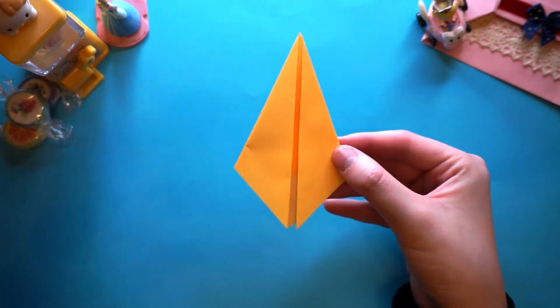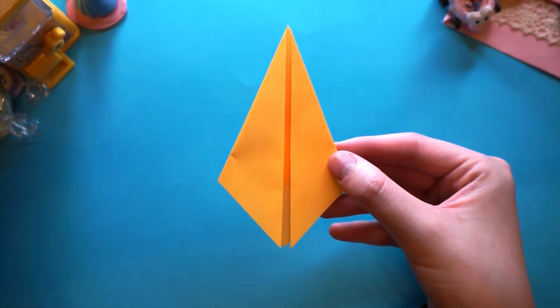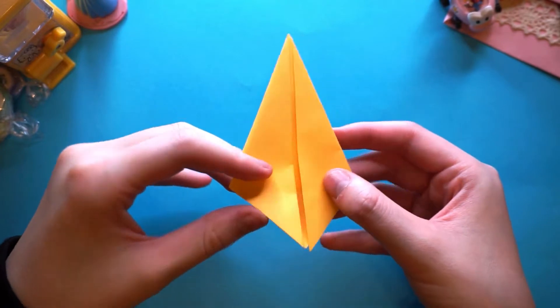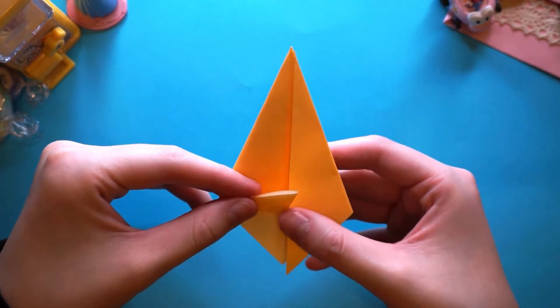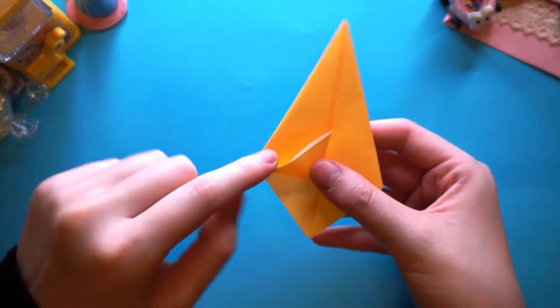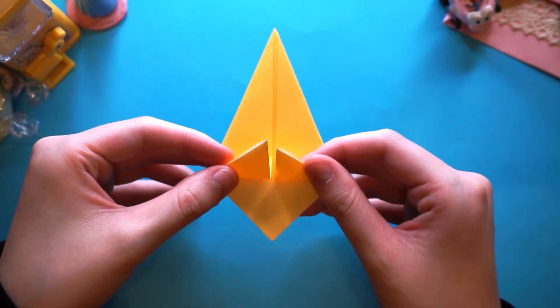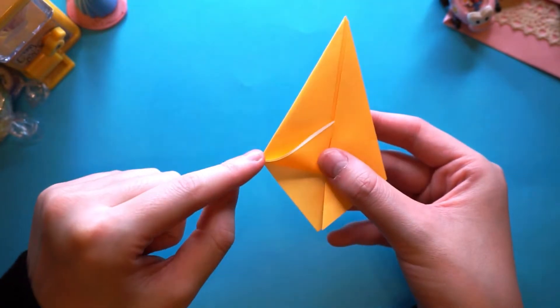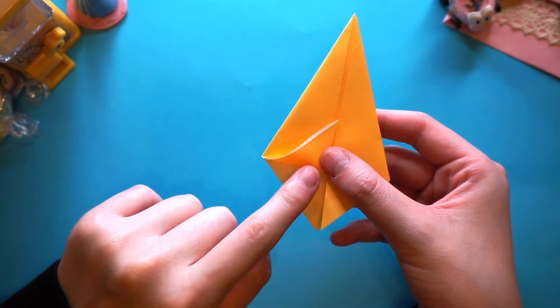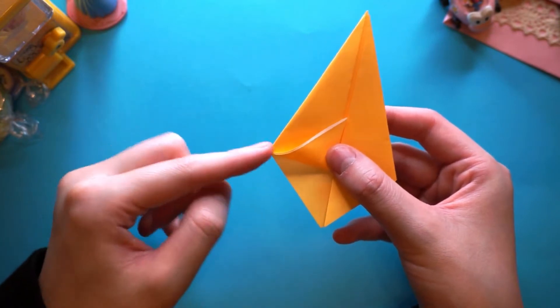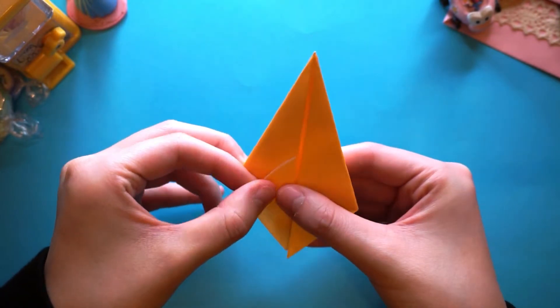we're going to flip the model over. Once we've flipped it over, what we're going to do is fold both sides, both of these little bits up so that the line is up to this corner here, the bottom line.